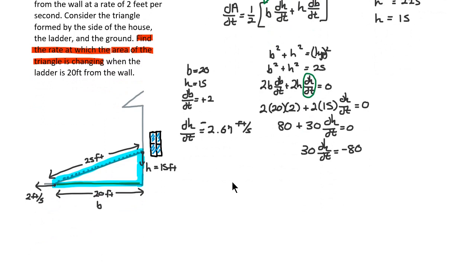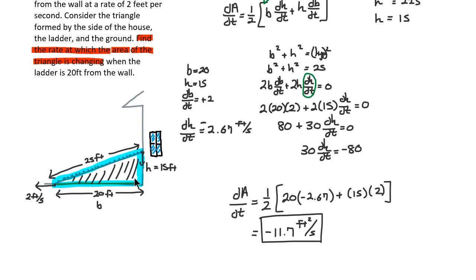So here we go, our answer. dA/dt equals one half, a big bracket, and 20 times negative 2.67 plus 15 times positive 2. And running all of this into your calculator will get you negative 11.7 feet squared per second. Feet squared, we're talking about area after all. And negative, because clearly this triangle is just getting smaller, and smaller, and smaller.